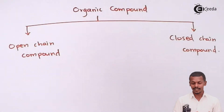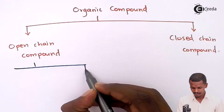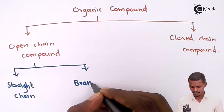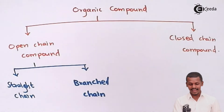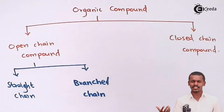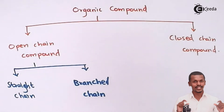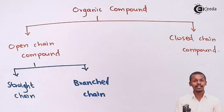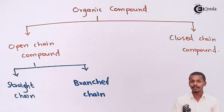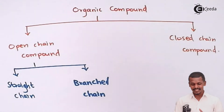Open chain compounds are further divided into two parts: straight chain and branched chain organic compounds. As the name suggests, in straight chain compounds the carbon atoms are attached to each other forming a straight chain. In branched chain organic compounds — like tertiary butyl bromide — the compound forms a branched structure. Let me give an example to make this very clear.